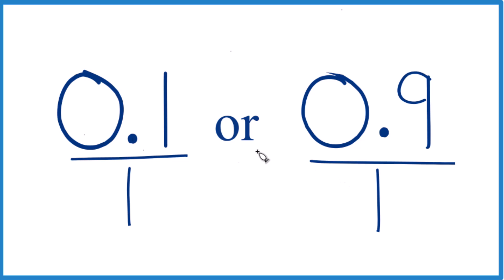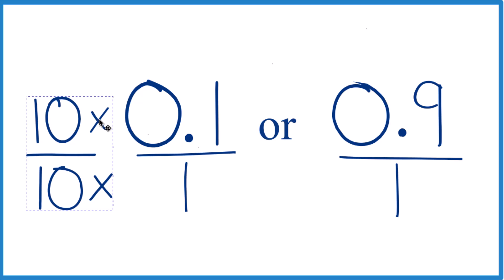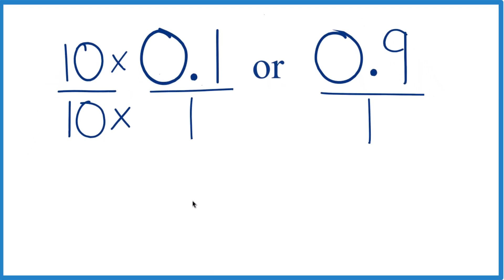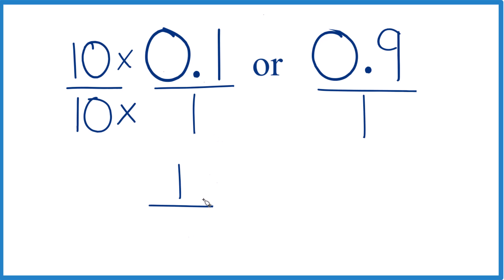Over here, do the same, and then to get this to be a whole number, I could multiply 10 times 0.1, and that would give me 1. But I also have to multiply the denominator by 10 as well, because 10 over 10 is 1. So we're not changing the value, just the way it's represented. 10 times 0.1, that's 1. 10 times 1 is 10, so we have 1 tenth. We have a fraction now.